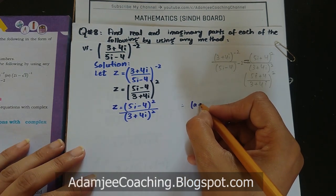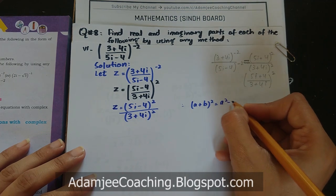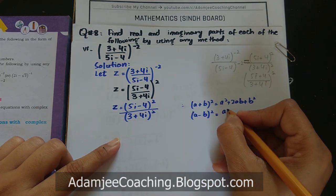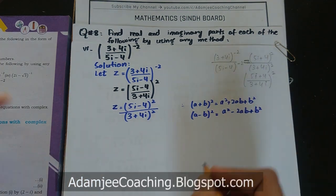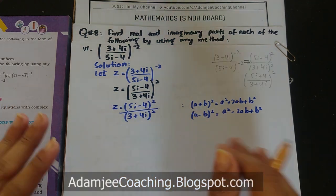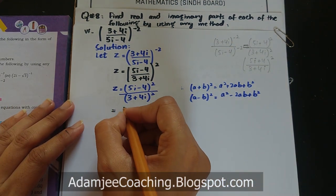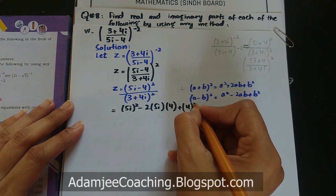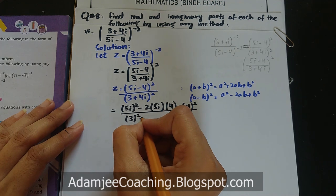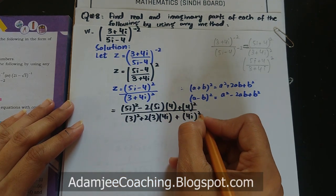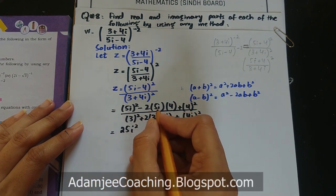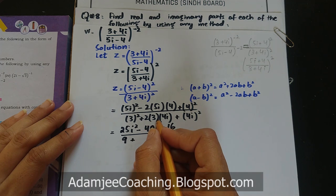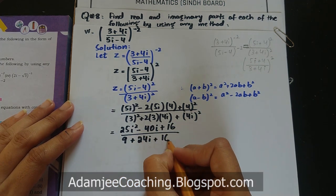Numerator (5iota-4)² = (5iota)² - 2×5×4×iota + 4² = 25iota² - 40iota + 16۔ iota² = -1 رکھیں: -25 - 40iota + 16 = -9 - 40iota۔ Denominator (3+4iota)² = 9 + 24iota + 16iota² = 9 + 24iota - 16 = -7 + 24iota۔